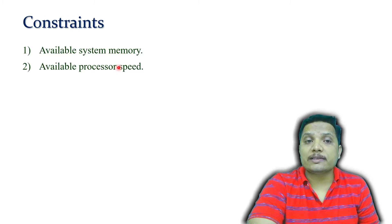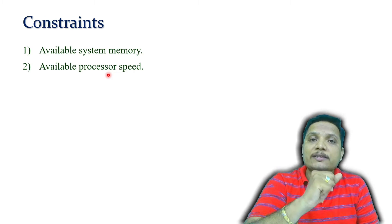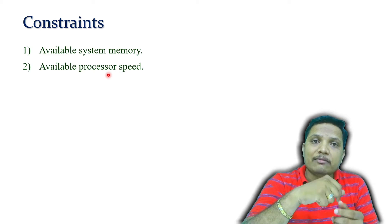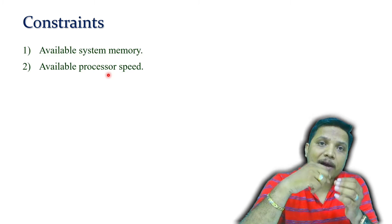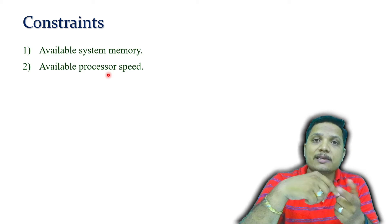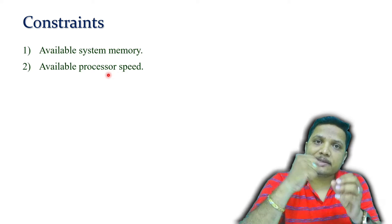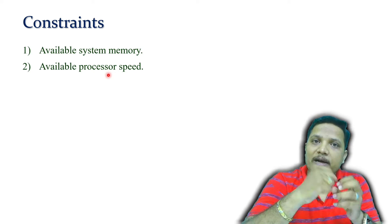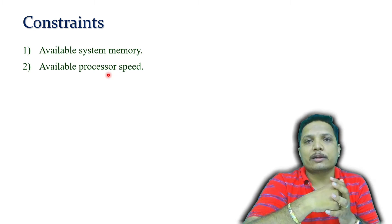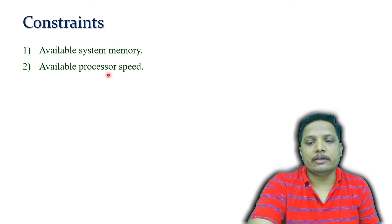The second constraint is processor speed. If we have a higher processor speed, then we can achieve faster execution of tasks. So processor speed defines whether execution is faster or slower, and that is also a very essential constraint.